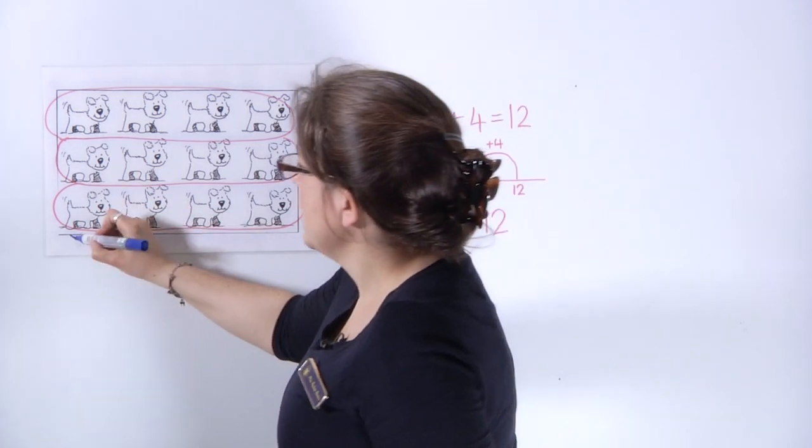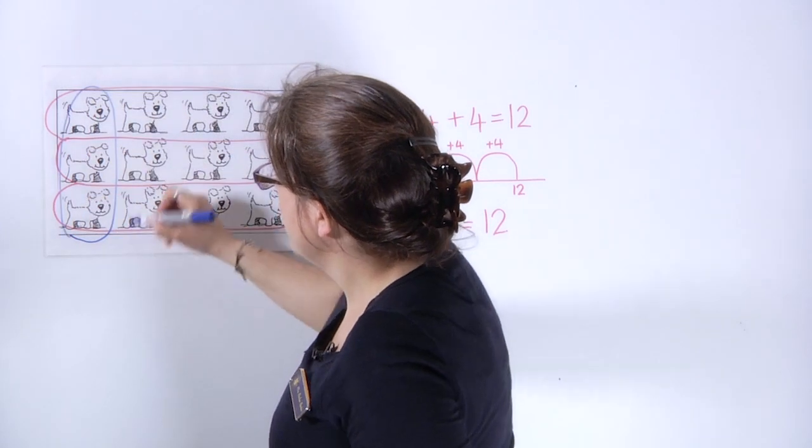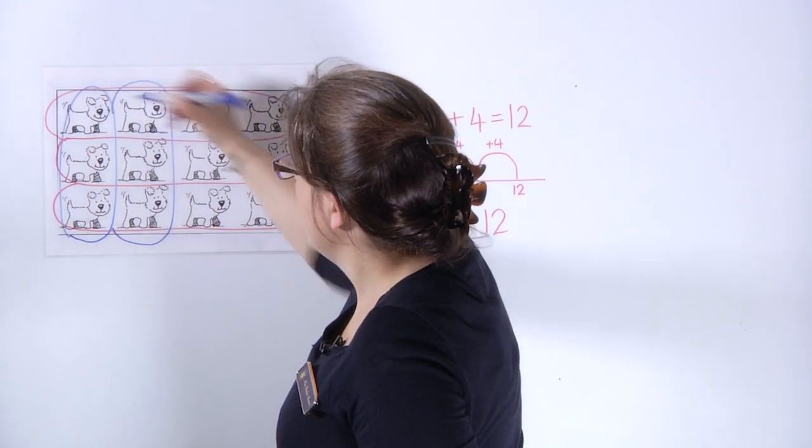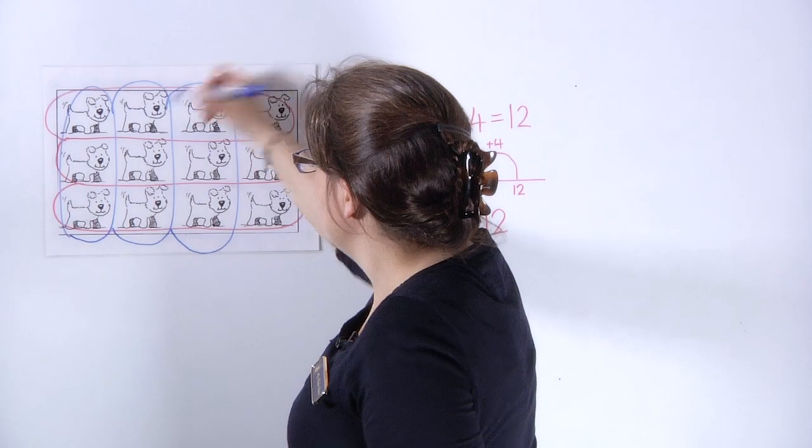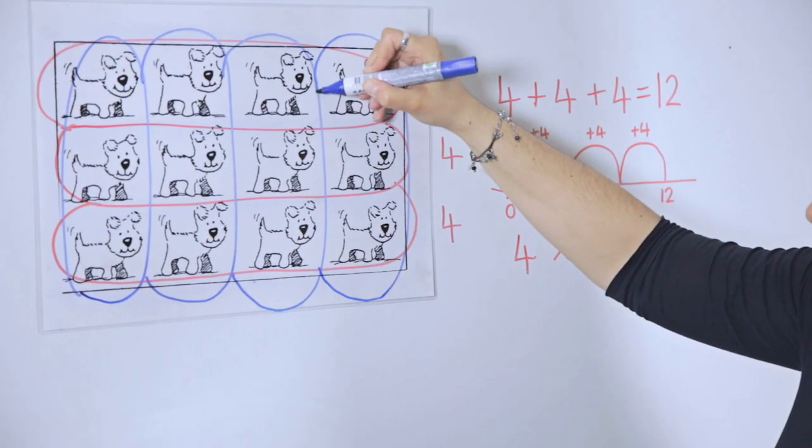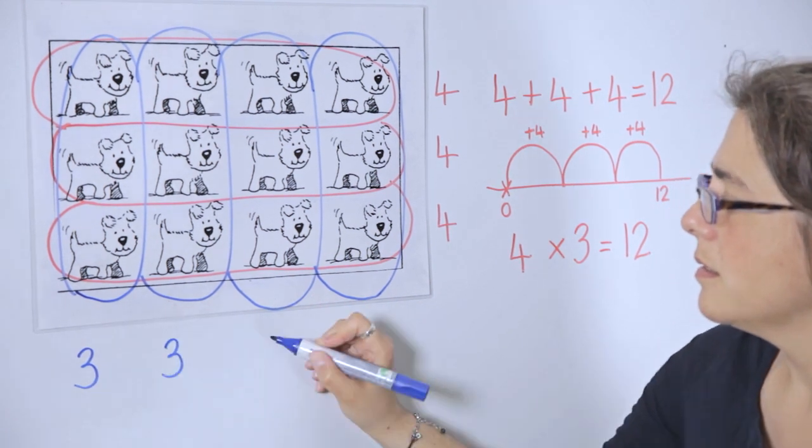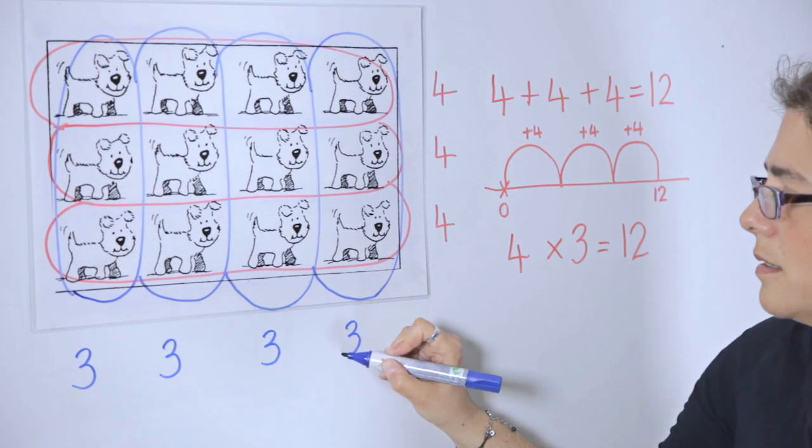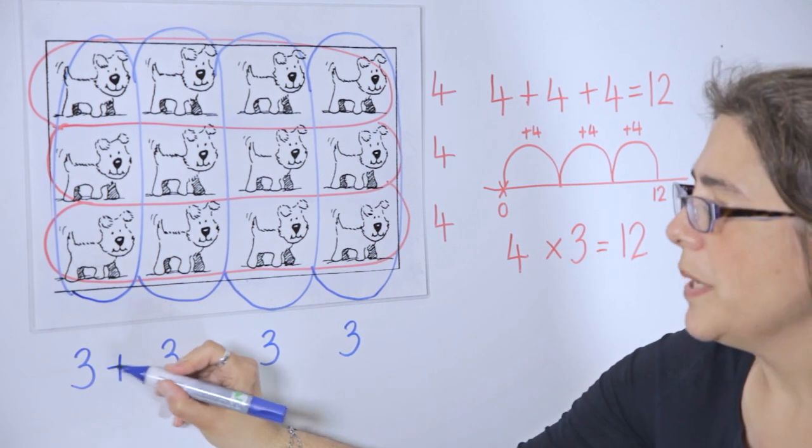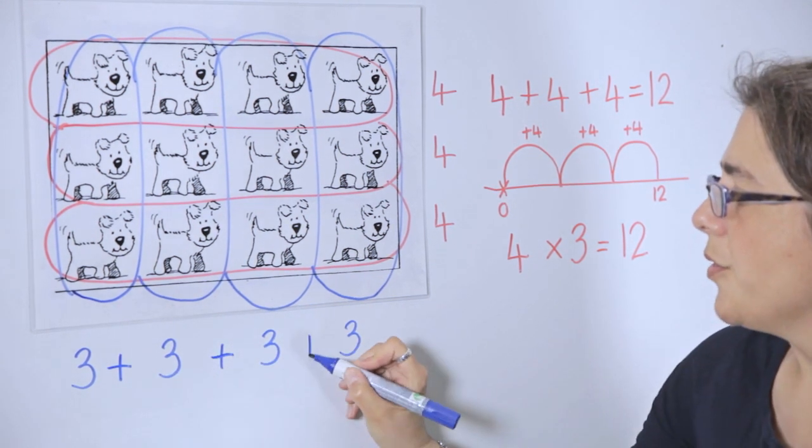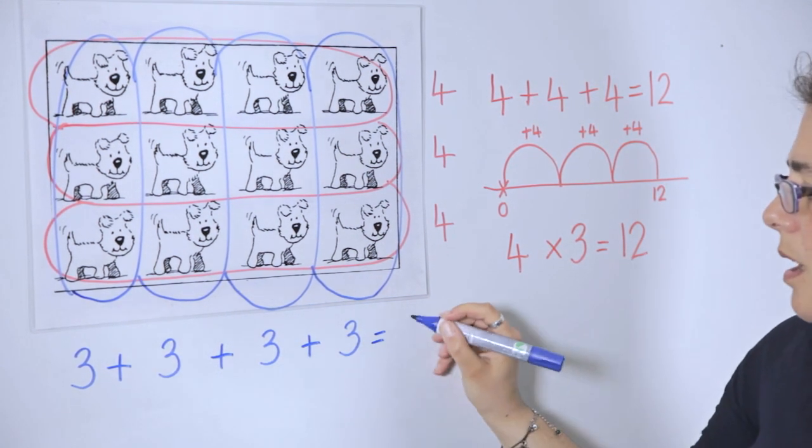Then we can look at grouping them in the opposite way, in columns instead of rows. And again, because they're in the array, they're neatly arranged into groups of the same size. And this time we can do the repeated addition, so that the three dogs in each group are added together.